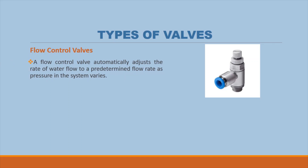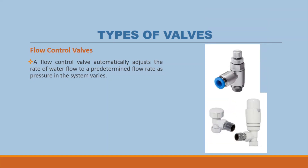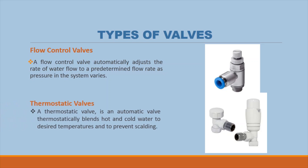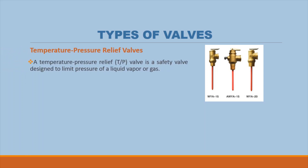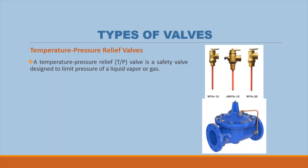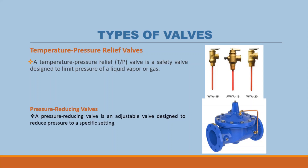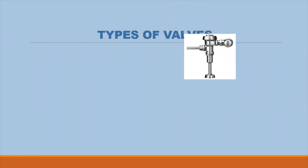A flow control valve automatically adjusts the rate of water flow to a predetermined flow rate as pressure in the system varies. A thermostatic valve, frequently called a tempering valve or mixing valve, is an automatic valve that thermostatically blends hot and cold water to a desired temperature to prevent scalding. A temperature pressure relief valve is a safety valve designed to limit pressure of a liquid, vapor, or gas.